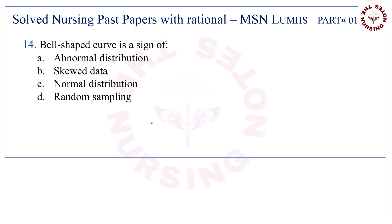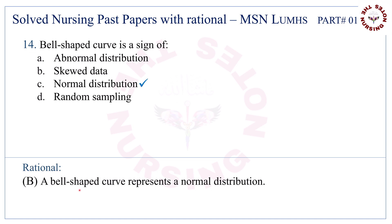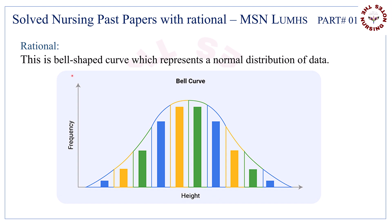Question number fourteen: a bell-shaped curve is a sign of. Correct answer is C, normal distribution. This bell-shaped curve represents a normal distribution of data.